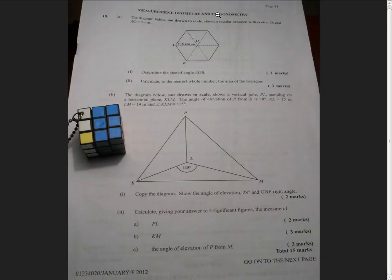Part B tells us that the diagram below, not drawn to scale, shows a vertical pole PL standing on a horizontal plane KLM. The angle of elevation of P from K is 28 degrees, KL is 15 meters, LM is 19 meters, and angle KLM is 115 degrees. Part 1 asks us to copy the diagram and show the angle of elevation of 28 degrees and one right angle.